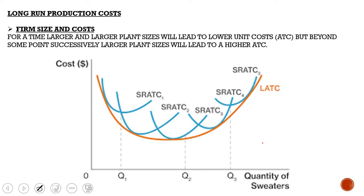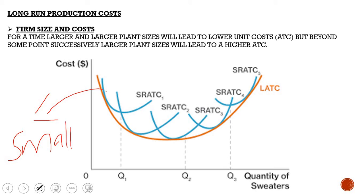For long run production costs, we look at firm size and cost. Larger and larger plant sizes will initially lead to lower unit costs — average total cost decreases. But beyond some point, larger plant sizes will lead to higher average total cost. The various short run average total cost curves make up the long run average total cost curve, where the first short run ATC represents the smallest plant and the last represents the largest plant.